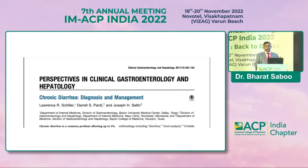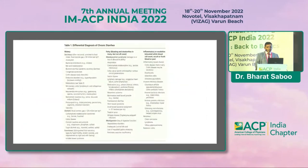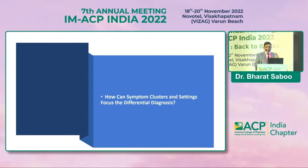This is a review from the American College of Gastroenterology which clearly defines the differential diagnosis of chronic diarrhea. It is a long list because chronic diarrhea can be watery, fatty, or inflammatory. The question is how symptom clusters and clinical setting can focus the differential diagnosis.